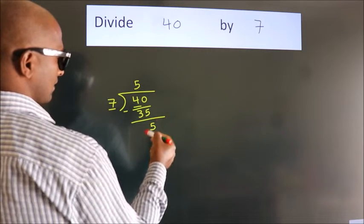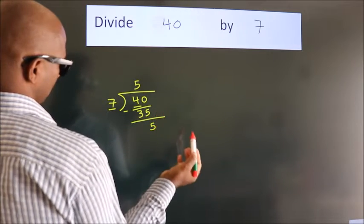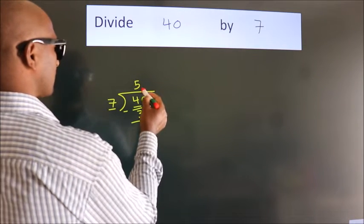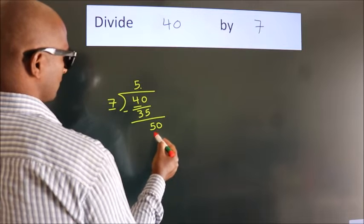After this, no more numbers to bring down. So what we do is put a dot and take 0, giving us 50.